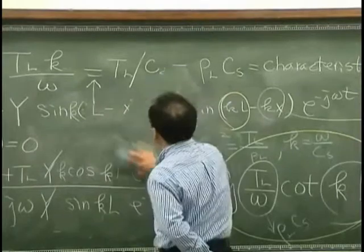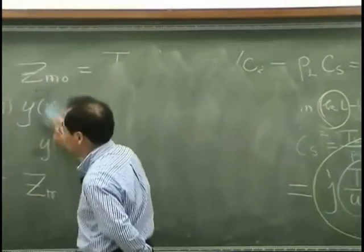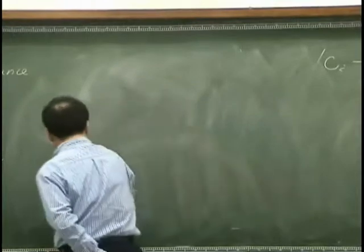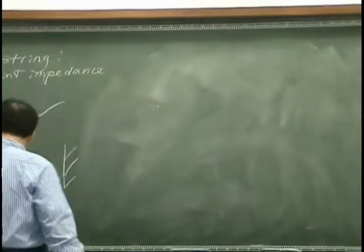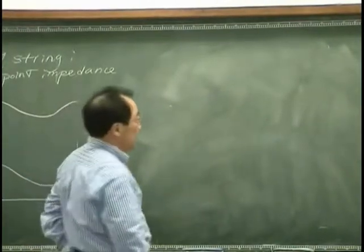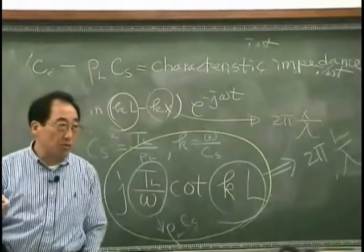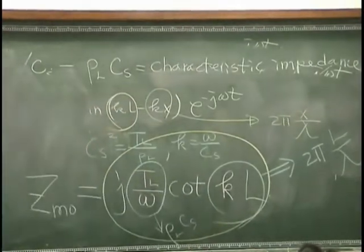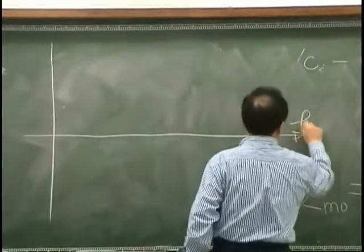Let's investigate what this formula really means — the physical meaning. To understand the physical meaning of this driving point impedance, the best way is to draw the driving point impedance with respect to KL. So let's draw the driving point impedance with respect to KL.